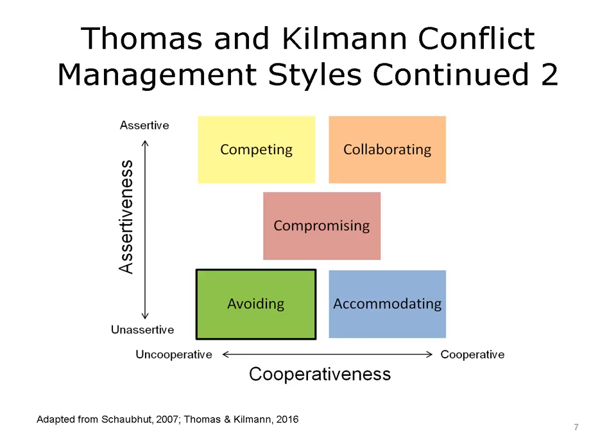In the bottom left corner, we find the avoiding style, which combines both unassertive and uncooperative modes. A party may be aware of a conflict but chooses to overlook it and avoid others involved — also called passive-aggressive behavior. You may encounter people who seek to avoid change by ignoring requests for their assistance. You should be prepared to go up the chain of command to department heads and executives when needed.